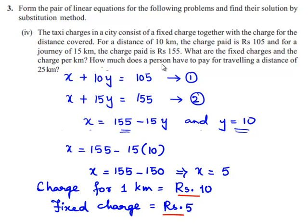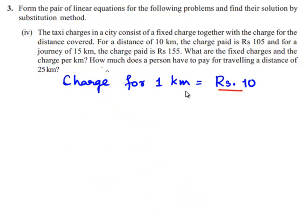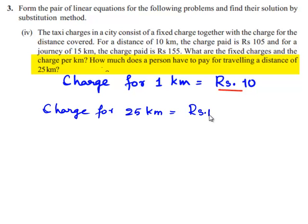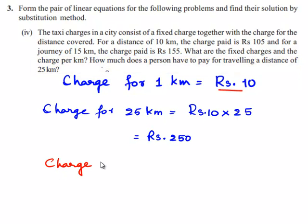We are also asked to find how much a person has to pay for traveling a distance of 25 kilometers. We found the charge for 1 kilometer is equal to 10 rupees. So the charge for 25 kilometers is 10 rupees multiplied by 25, which is 250 rupees, plus the fixed charge of 5 rupees. Therefore the total charge for 25 kilometers is rupees 255.